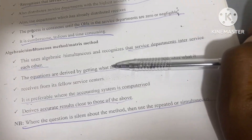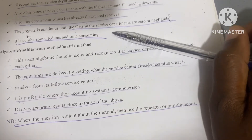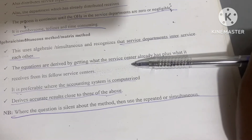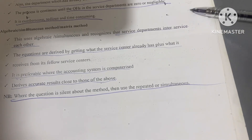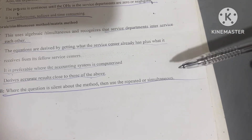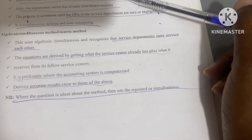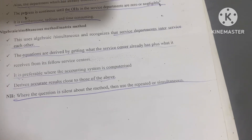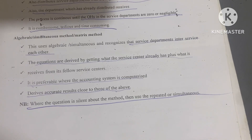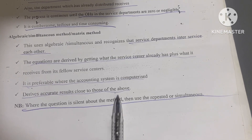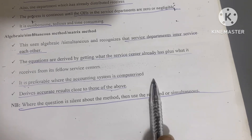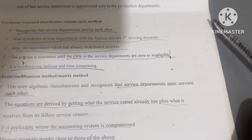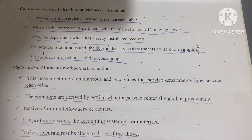The final method is the Algebraic, also known as the Simultaneous Equations or Matrix Method. This uses simultaneous equations and recognizes that service departments inter-service each other. Equations are derived by taking what the service center holds plus what it receives from fellow service centers. It is preferable where the accounting system is computerized and derives accurate results. We will look at a worked example in the next video.